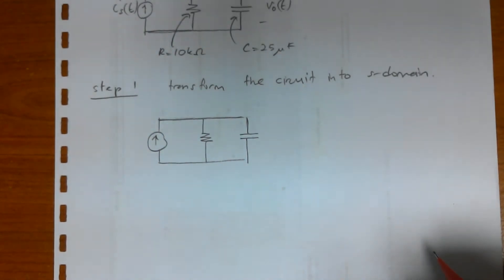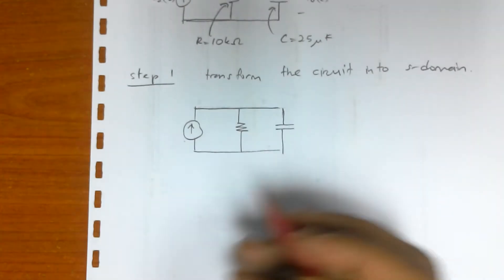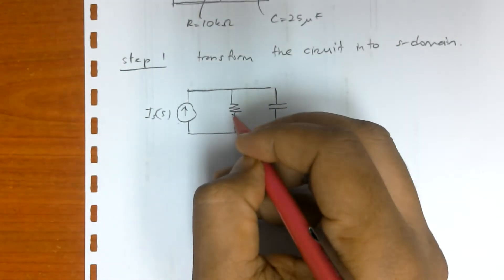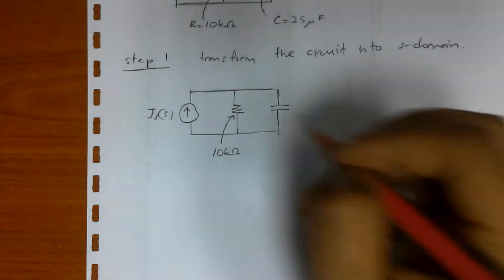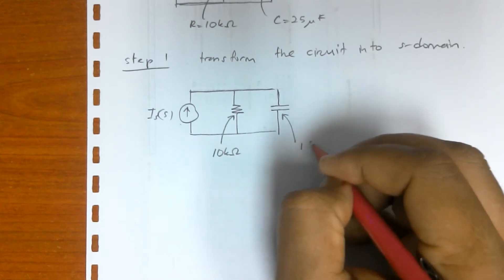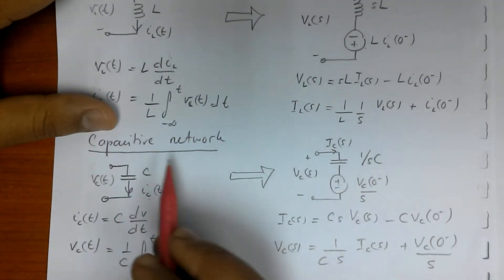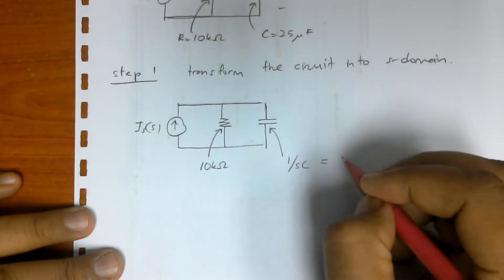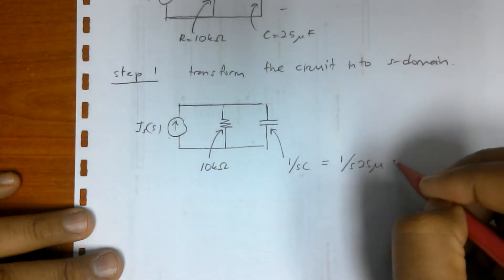Next is we will transform each of the elements into S domain. This is now in S domain. R in S domain is still 10 kilo ohm. On the other hand, C in S domain is actually 1 over SC. So now in S domain is 1 over S, 25 micro, and this is in ohm.